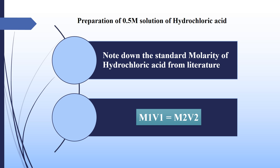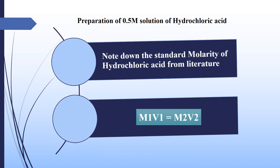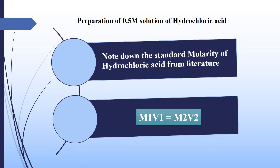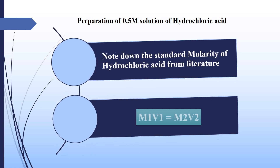To prepare a molar solution of hydrochloric acid, follow these two steps. First step: note down the standard molarity of hydrochloric acid from literature, as the standard molarity of every acid is present in literature. Second step: use the dilution formula to find out the required volume of hydrochloric acid. The dilution formula we use is M1V1 = M2V2, where M1 is the standard molarity of hydrochloric acid, which we can take from literature according to the concentration written on the acid's bottle.